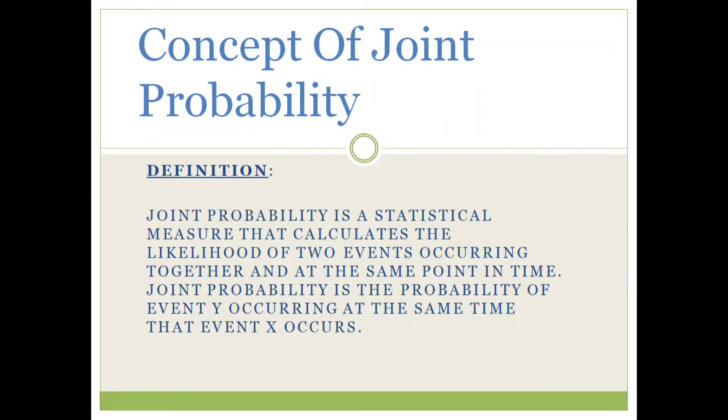Hello guys, my name is Pravin. Today I am going to introduce you all to the concept of joint probability. Let's see the definition: Joint probability is a statistical measure that calculates the likelihood of two events occurring together and at the same point in time. Joint probability is the probability of event Y occurring at the same time that event X occurs.